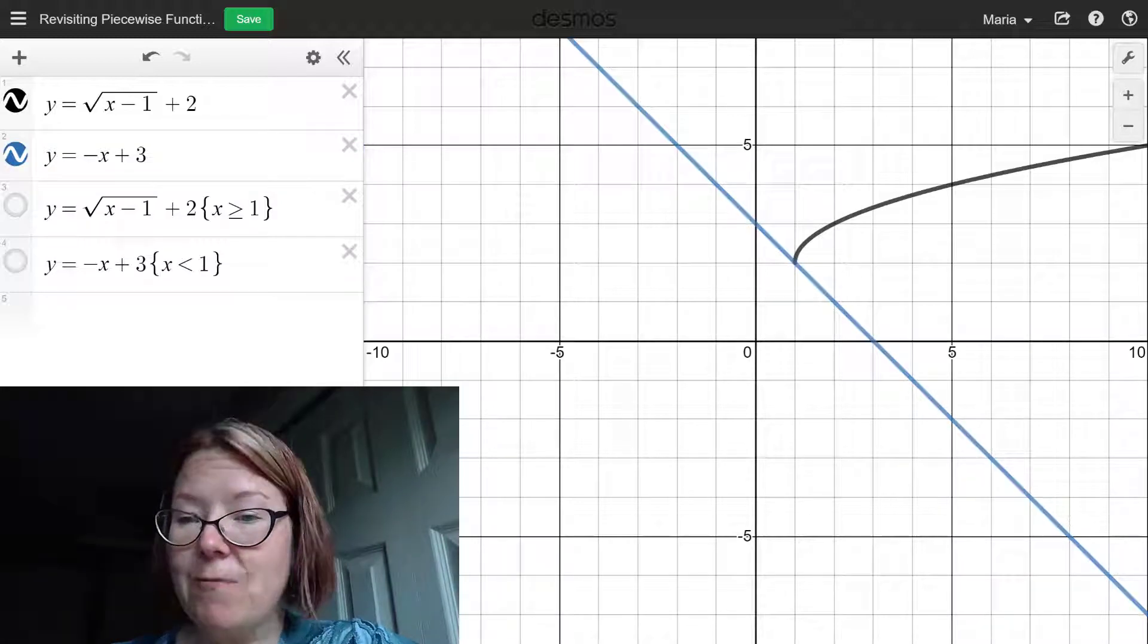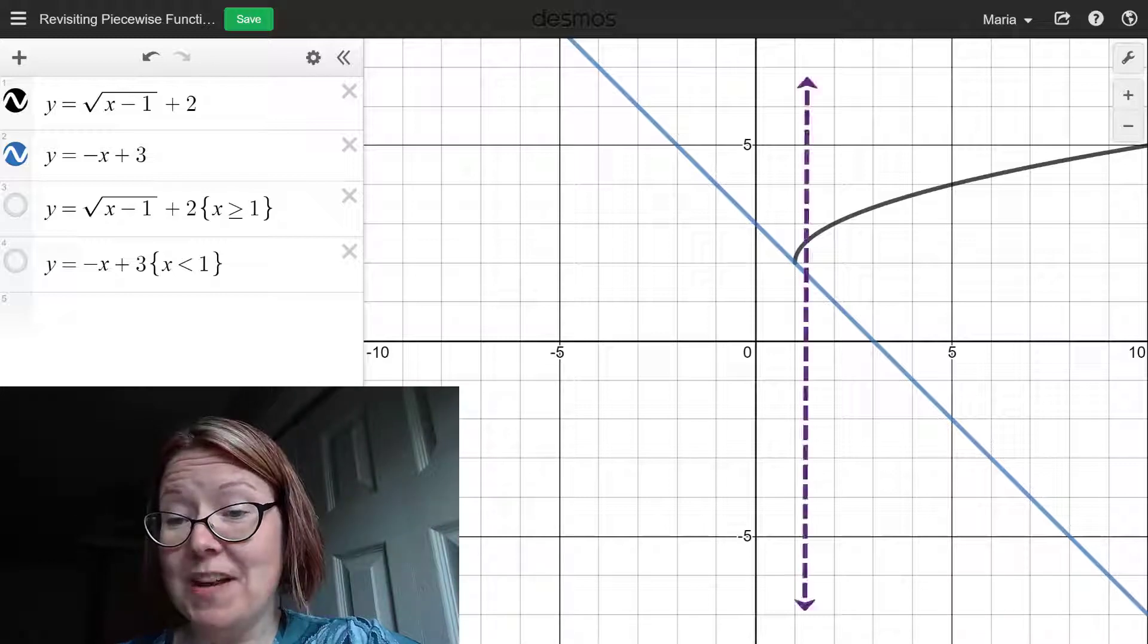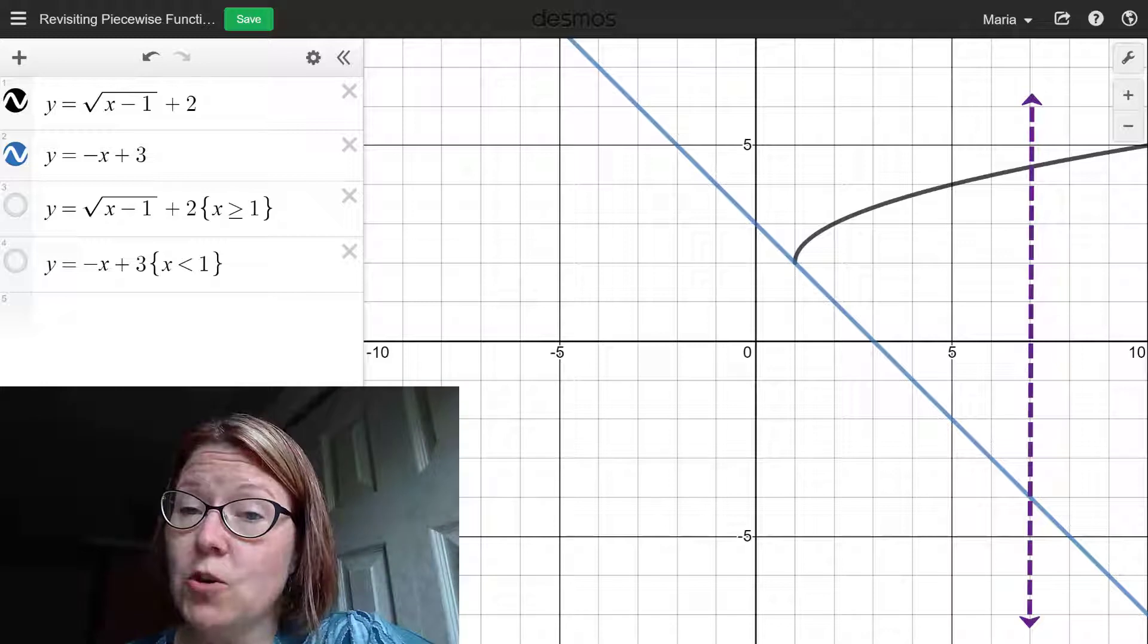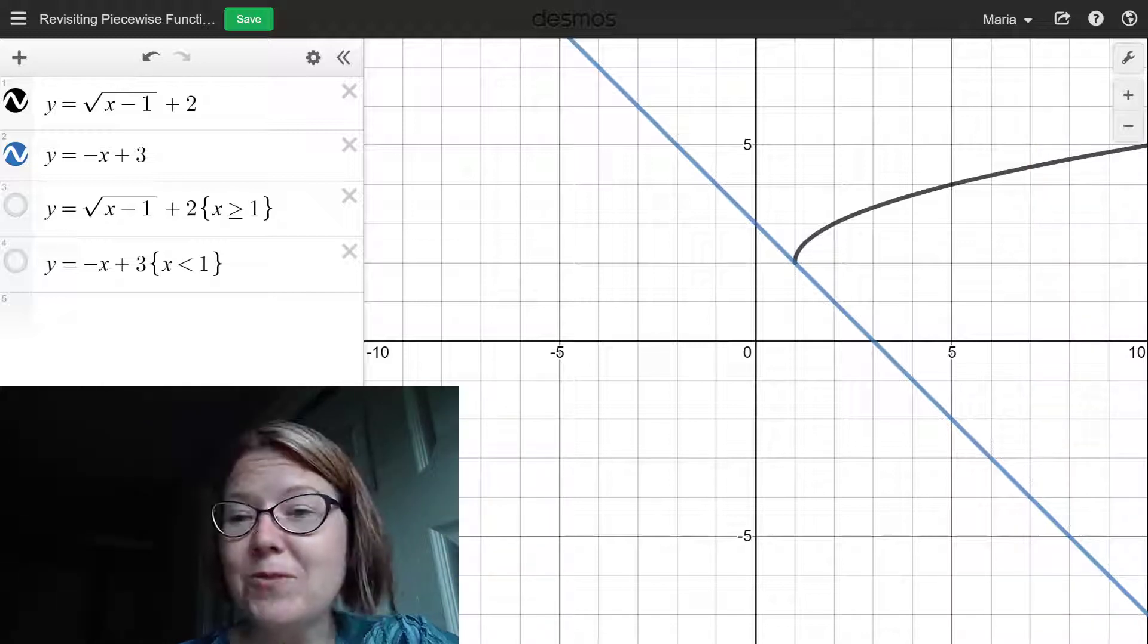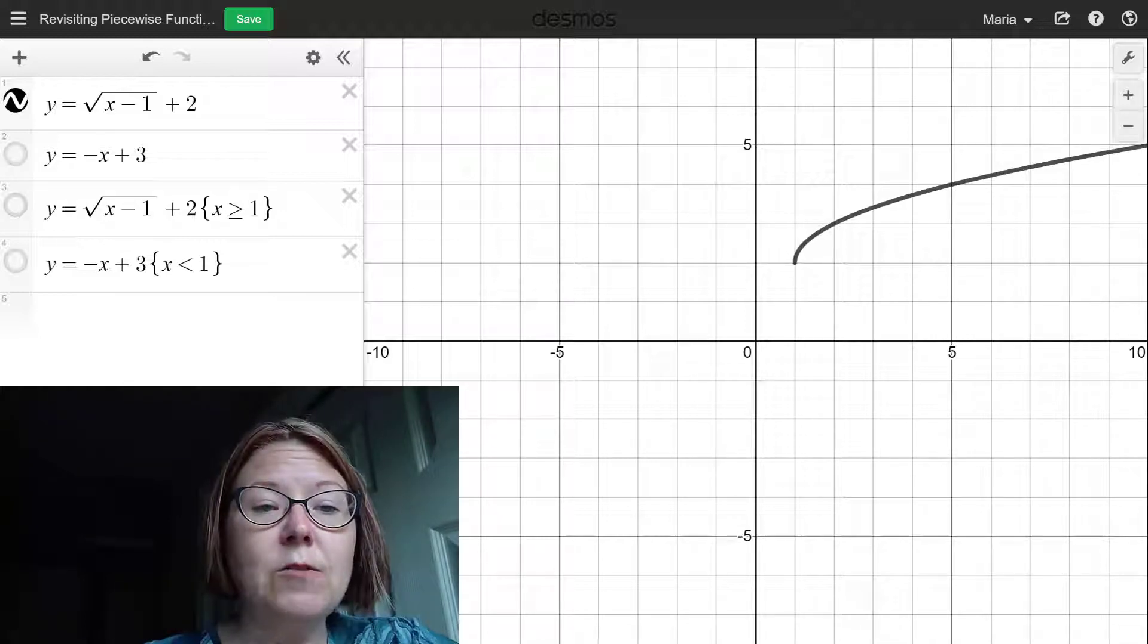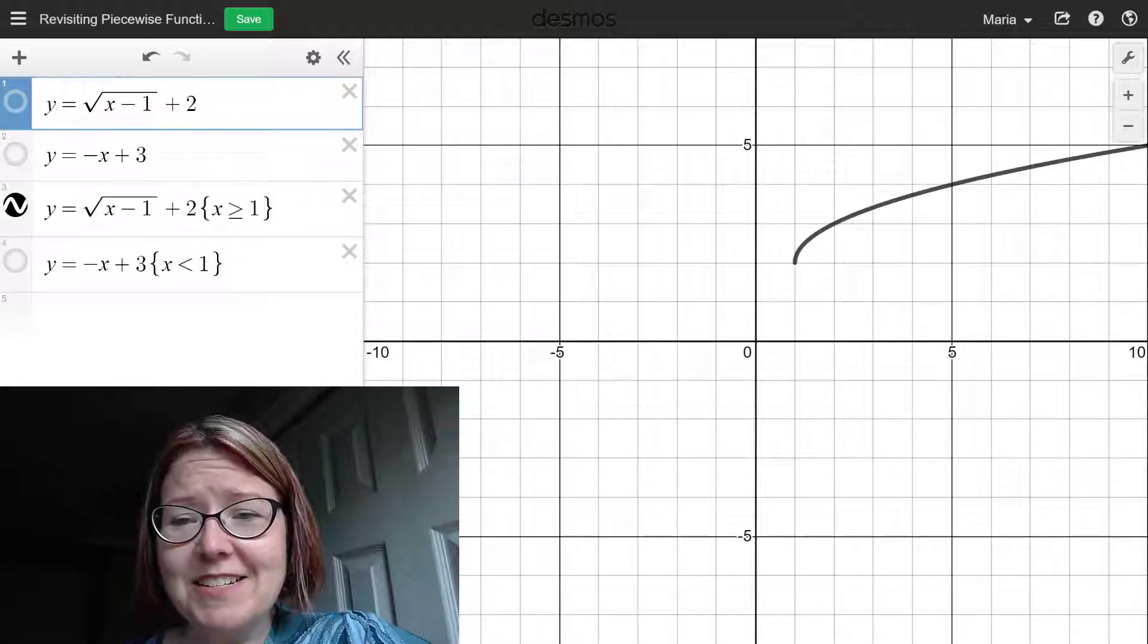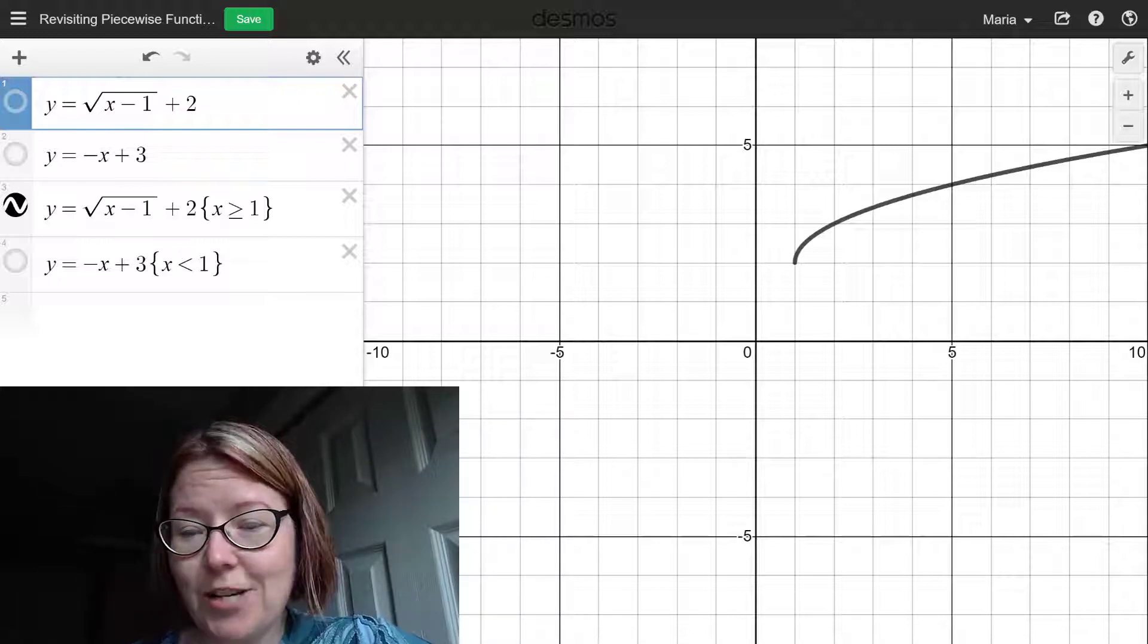Now clearly, if we were to graph what I see on the screen right now, it would not be a function because it does not pass the vertical line test from x equals 1 going to the right. But I haven't restricted the domain yet, so let me do that. I'm going to start with y equals the square root of (x - 1) plus 2. I'm only using this one when x is greater than or equal to 1. And that actually has no effect on this graph at all because the last value I could use is the endpoint, which is at (1, 2).